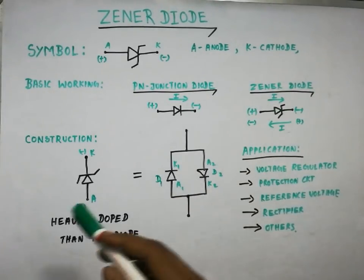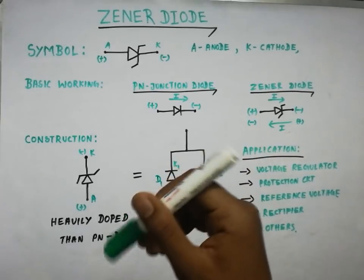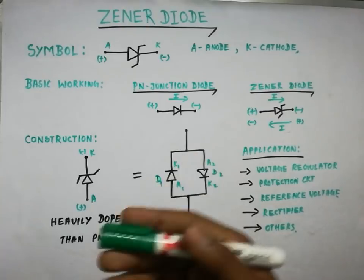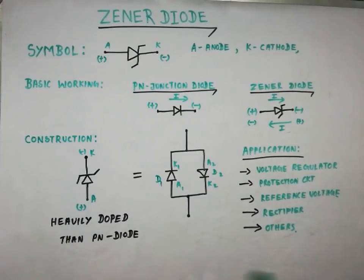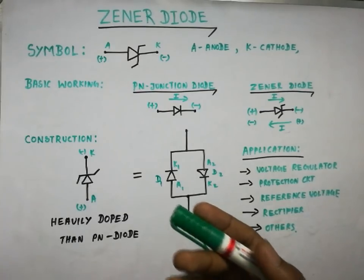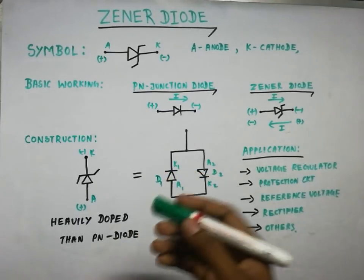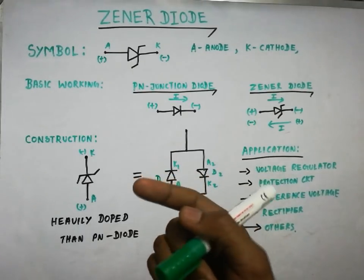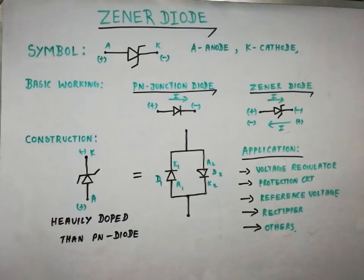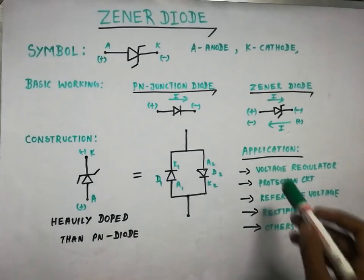The Zener diode has important applications. It is very useful in circuit design. The first application is voltage regulation. If we use an IC like 7805 or LM370, that IC costs around 50 rupees, but a Zener diode can do the same job for just 1 rupee. So it is very useful and cost-effective for voltage regulation.